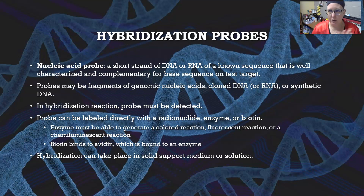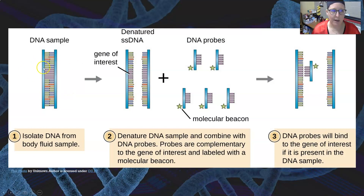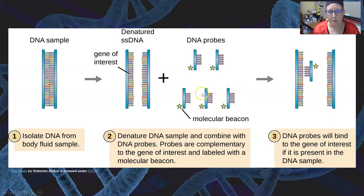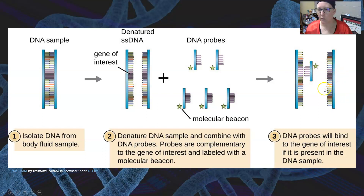Hybridization of the probe to the target DNA or RNA can take place on a solid support medium or in solution. We would have DNA in the sample, denature it to become single-stranded, then incubate it with labeled DNA probes targeting a gene of interest. If the gene is present and the probes are complementary, they will anneal. Everything that is not hybridized is washed off, and probes are then detected as present or absent.